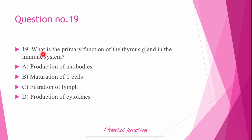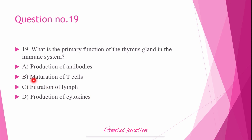Question number 19: What is the primary function of the thymus gland in the immune system? Options are: production of antibodies, maturation of T cells, filtration of lymph, and production of cytokines. The right answer is B — maturation of T cells is the primary function of the thymus gland in the immune system.